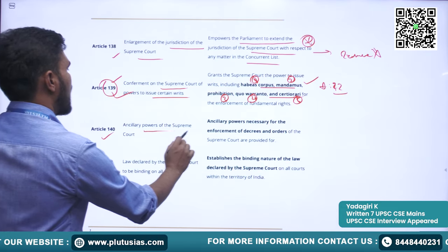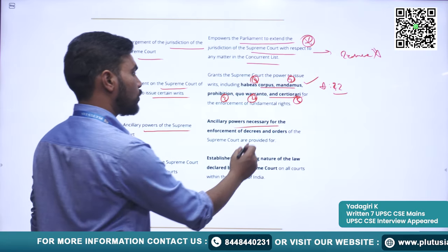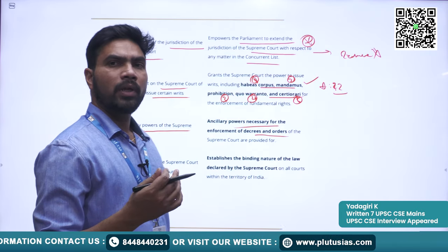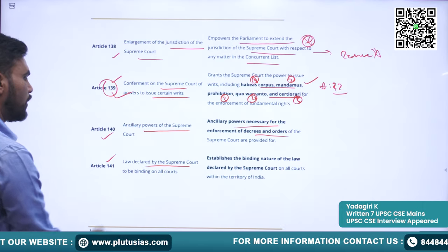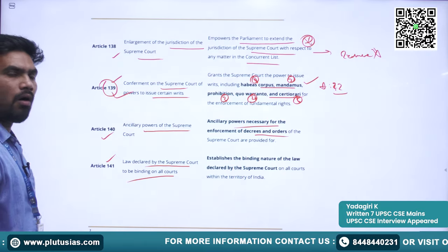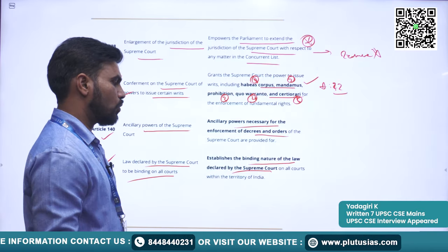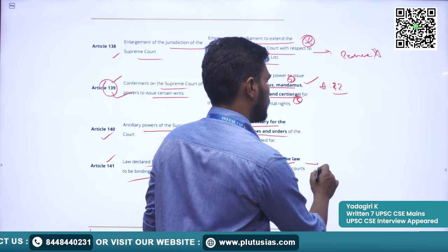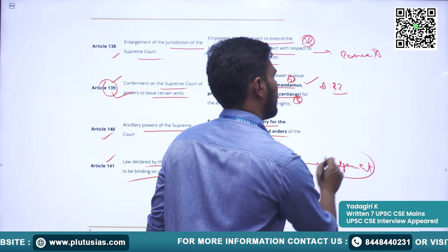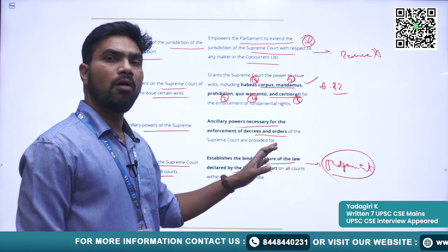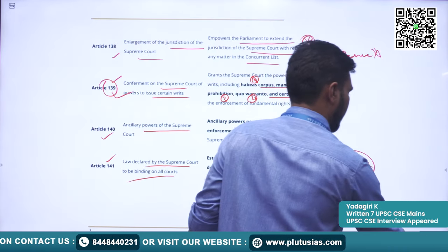Article 140 covers the ancillary powers of the Supreme Court, which are necessary for the enforcement of decrees and orders. Article 141 states that the law declared by the Supreme Court is binding on all courts. It establishes that whatever judgment is given by the Supreme Court is binding on all other courts existing in the territory of India.